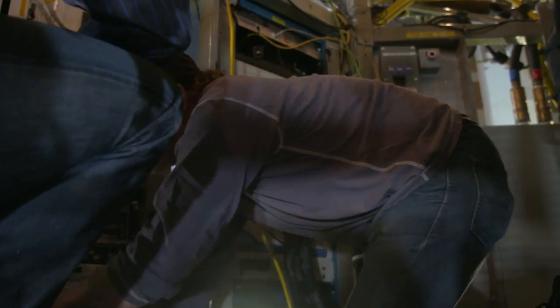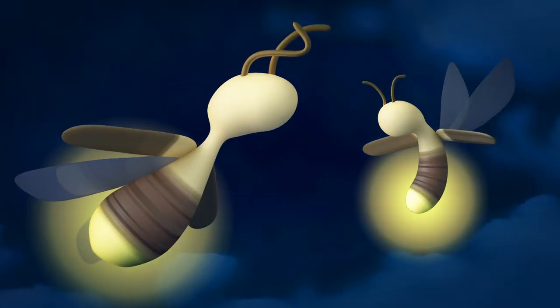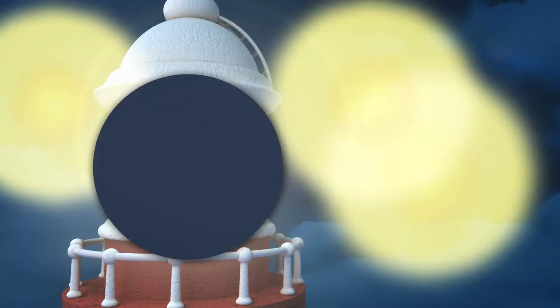Imagine a firefly flying around a lighthouse. To be able to see the firefly, we have to block out the light from the lighthouse. And we use a coronagraph to do that. And that's a very high-tech version of putting your thumb over the lighthouse.